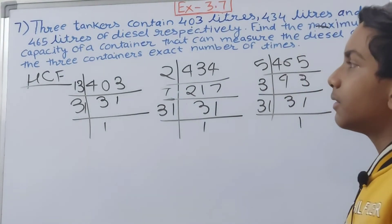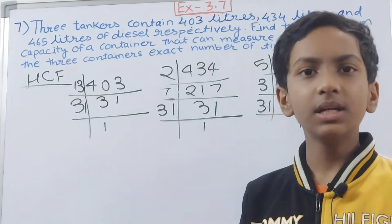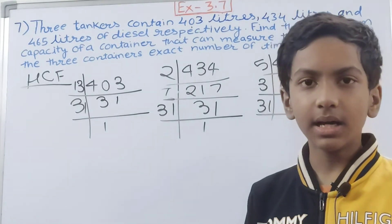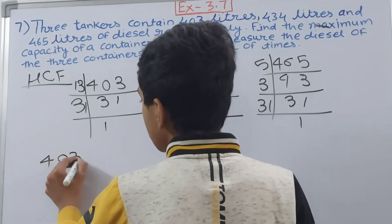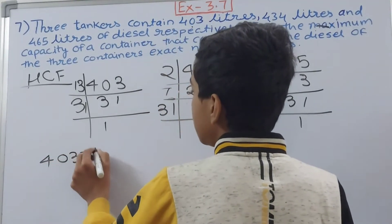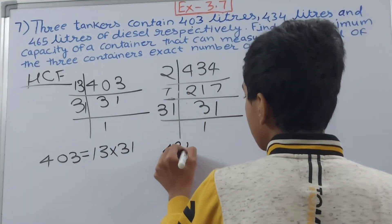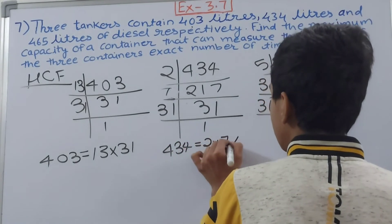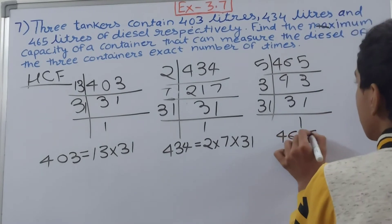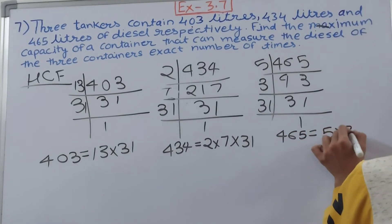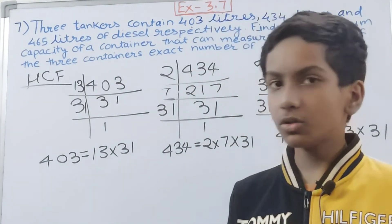Now we will write the prime factorization of these numbers and then we will pick the common one, we will multiply that and we will get our HCF. So 403 is equal to 13 into 31, and 434 is equal to 2 into 7 into 31, and 465 is equal to 5 into 3 into 31.